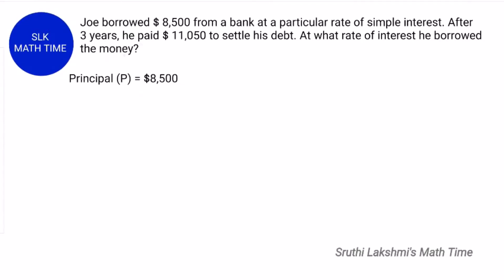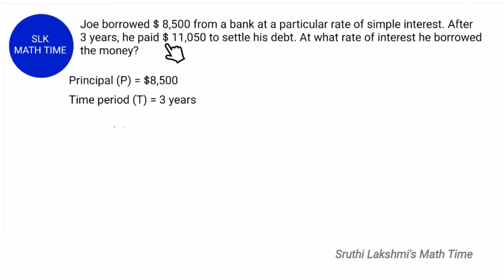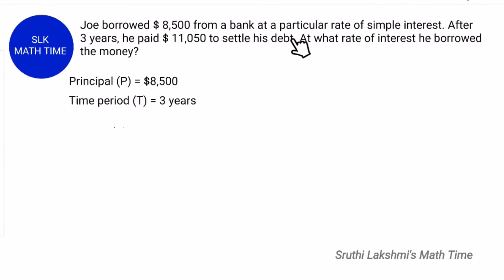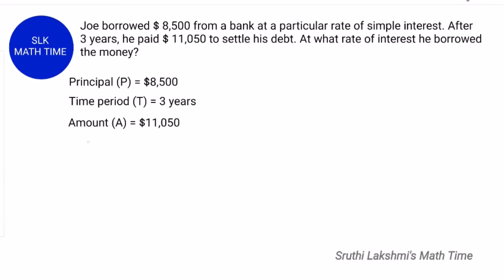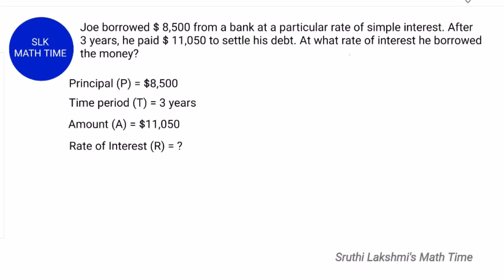After three years, so the time period T is three years. After three years he paid $11050 to settle his debt, so the total amount he paid is $11050. The amount A is $11050. They are asking at what rate of interest he borrowed the money.